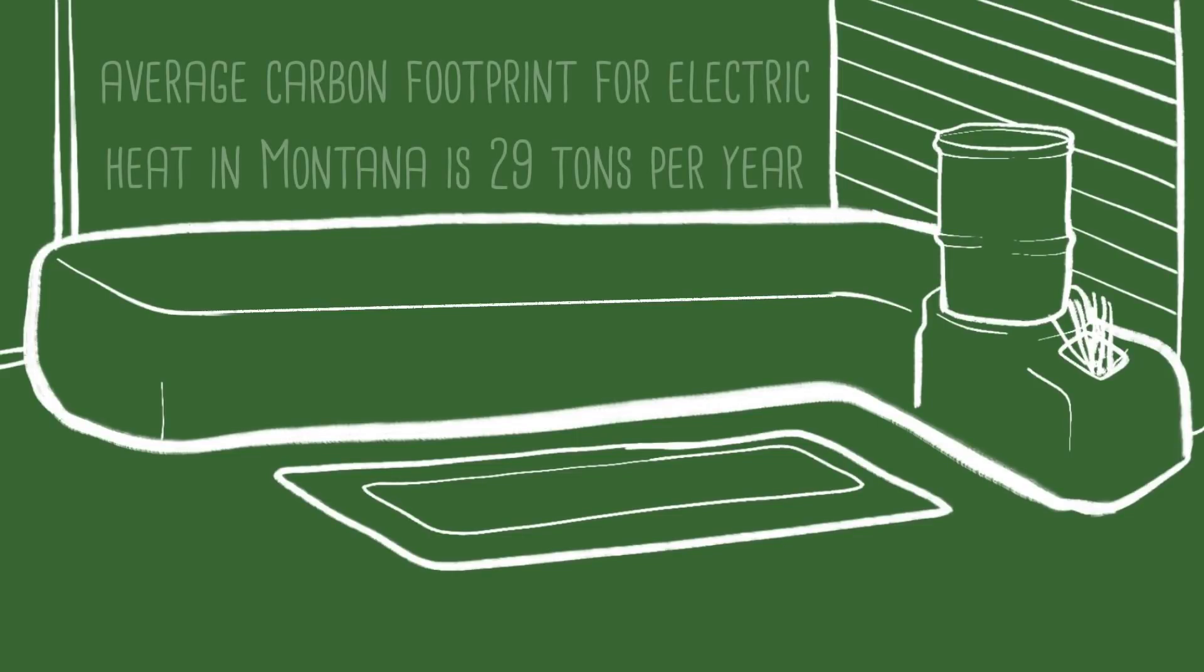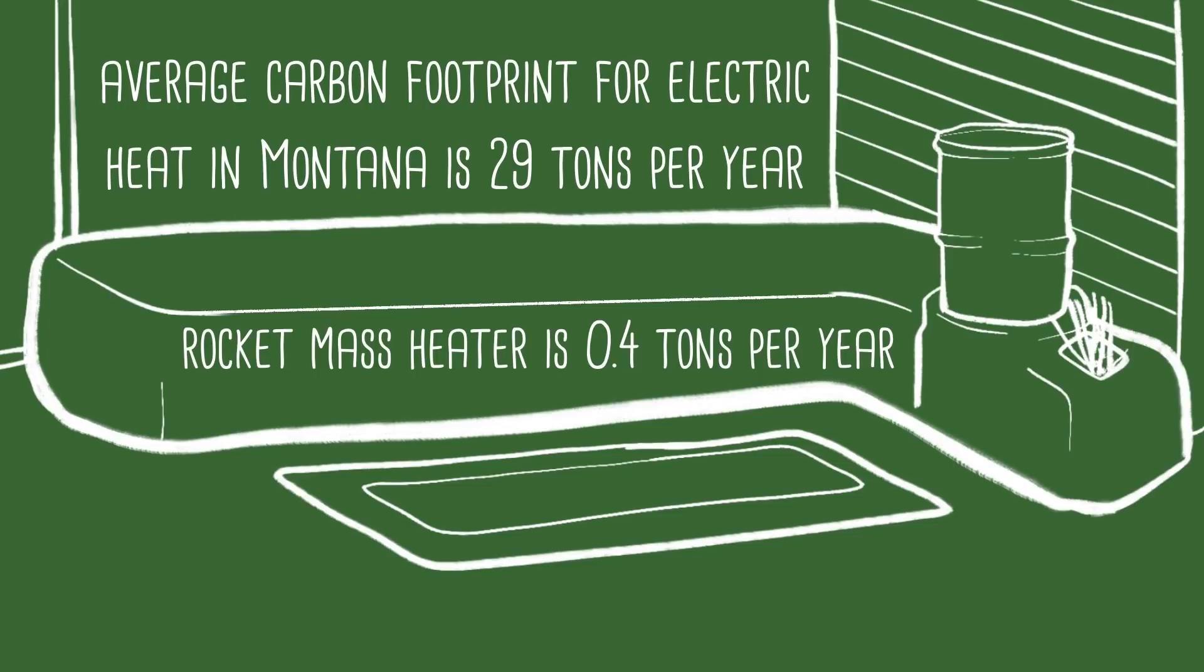The average carbon footprint for electric heat in Montana is 29 tons. To heat that same home with a rocket mass heater is 0.4 tons. Scaling this solution to a billion people would solve climate change.